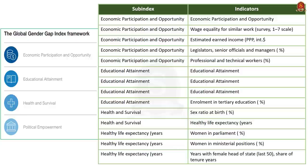Based on these dimensions, the Global Gender Gap Index has four main components, also called sub-indices: economic participation and opportunity, educational attainment, health and survival, and finally political empowerment. These four sub-indices have 14 indicators. Based on these indices, scores are given.